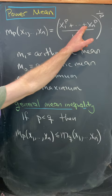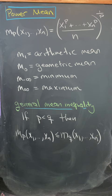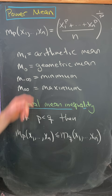Well, mp evaluated at x1 through xn is equal to the sum of the p-th powers all over n and then all raised to the 1 over p-power.